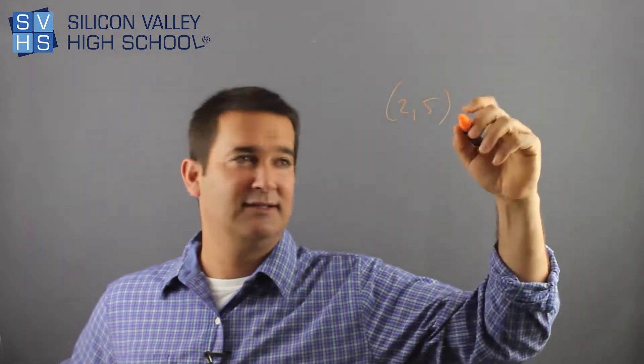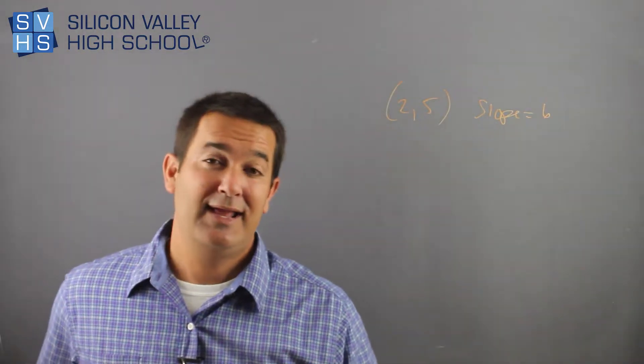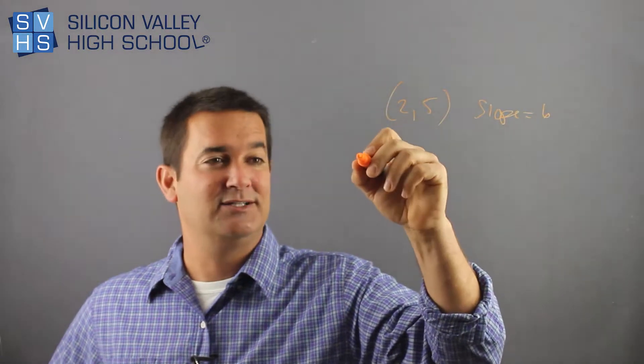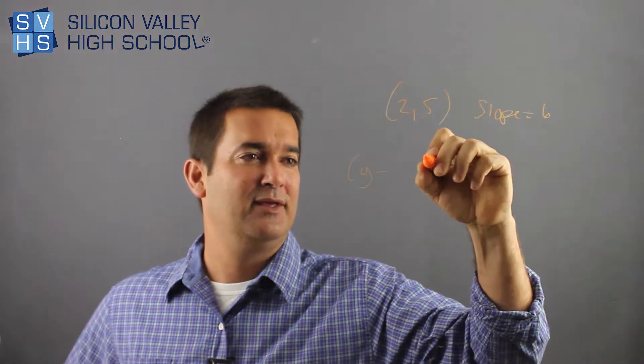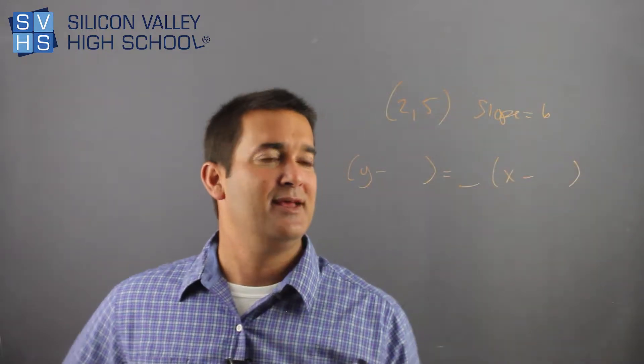So they might say something like this: write the equation of a line that has the point (2, 5) and a slope of 6. Write it in point-slope form. That's actually kind of easy, because all you do is this. You go Y minus something equals slope times X minus something.